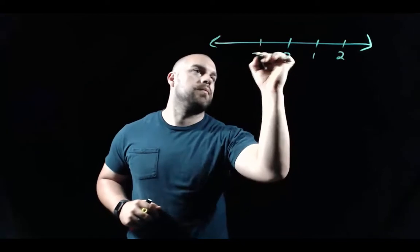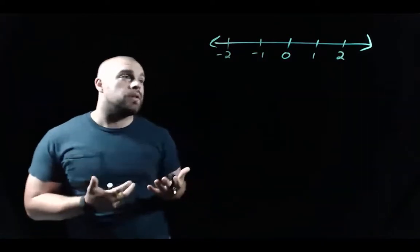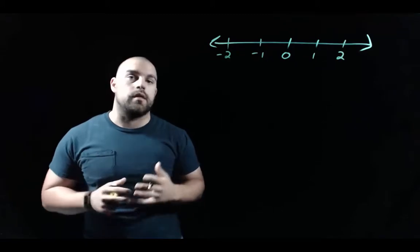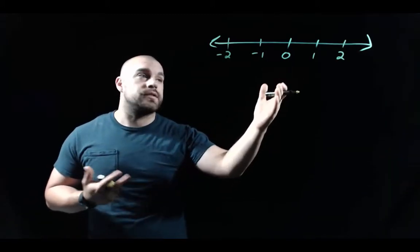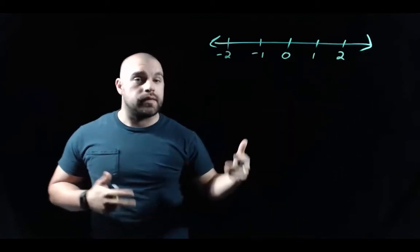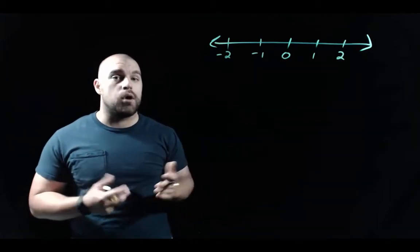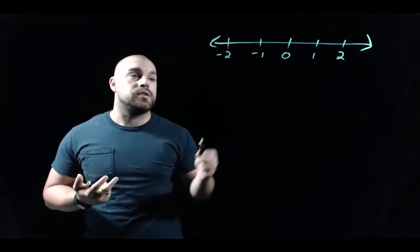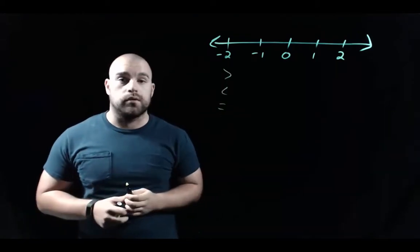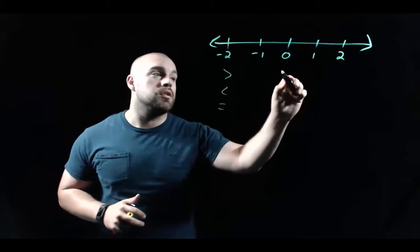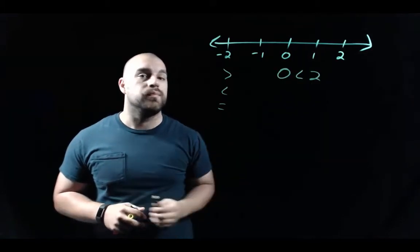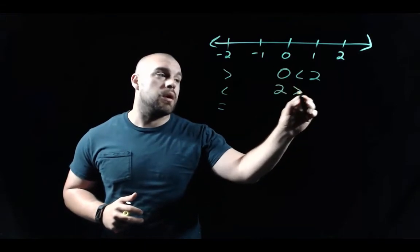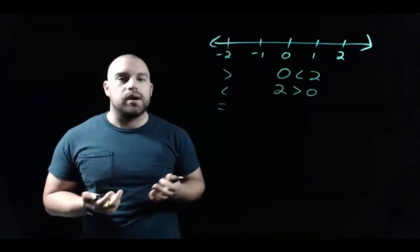Real numbers can be represented on a number line because they are ordered — some real numbers are smaller and some are bigger than others. On the number line, we're centered at zero. As we move to the right, numbers get bigger; as we move to the left, numbers get smaller. We can compare specific values using greater than, less than, or equal to. For example, 0 is less than 2, or equivalently, 2 is greater than 0.